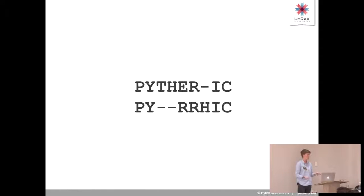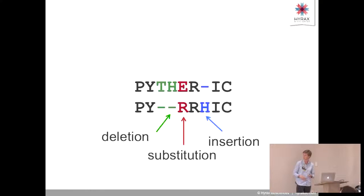Say you have pythoric, my made-up word, and you have pyrrhic, and you want to figure out what's changed between them. What you do is called an alignment. It's a pretty simple way to find the minimum edit distance between two sequences. There are three kinds of mutations in this alignment: a deletion where amino acids are removed, a substitution where one amino acid is changed into another, and an insertion where an amino acid has been added.